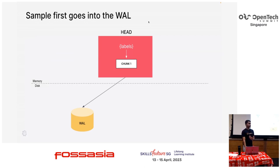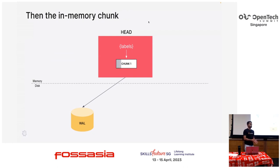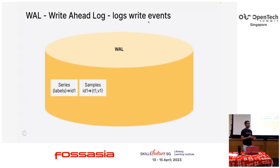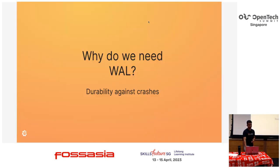Once we write it into the write-ahead log — logging that this write has come to the TSDB — we then write it inside the TSDB in a compressed fashion. Inside the write-ahead log, if it's the first sample, we store the labels of a series and the series gets an ID, it's ID 1. And we write another record which says the sample is T1, V1 for ID 1. The write-ahead log just logs every write that comes to the TSDB.